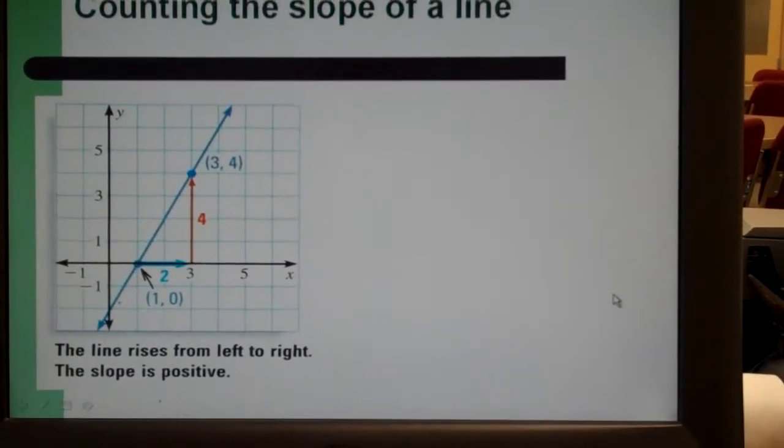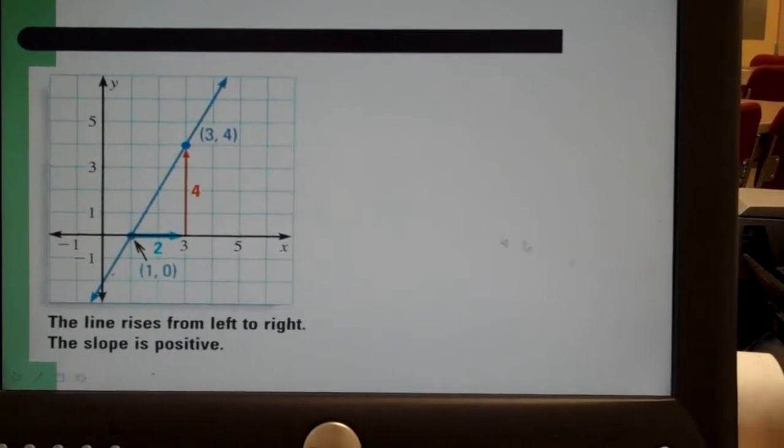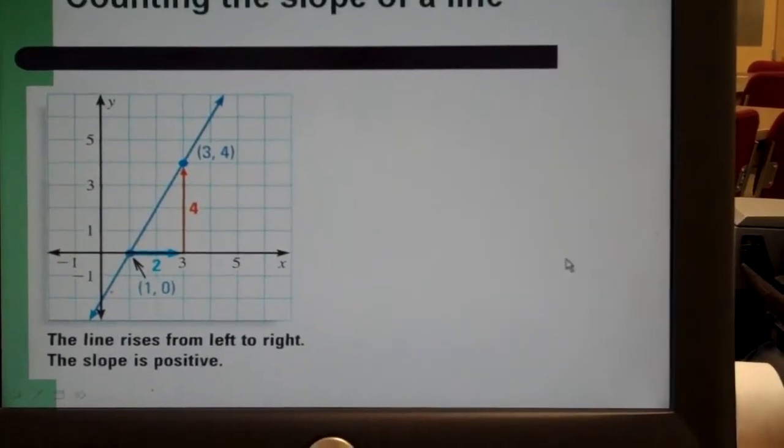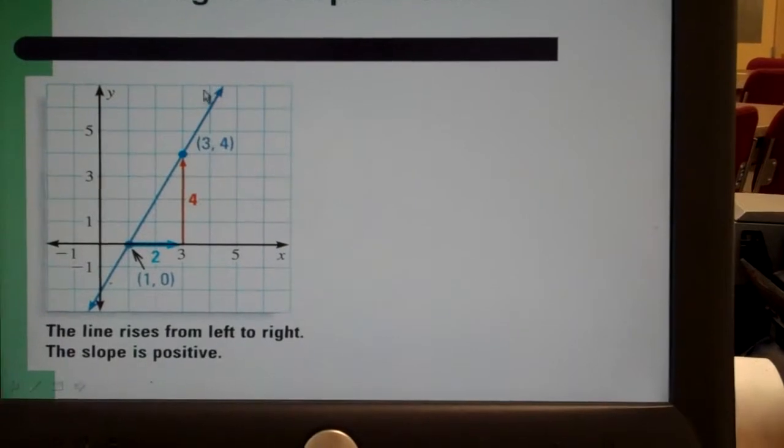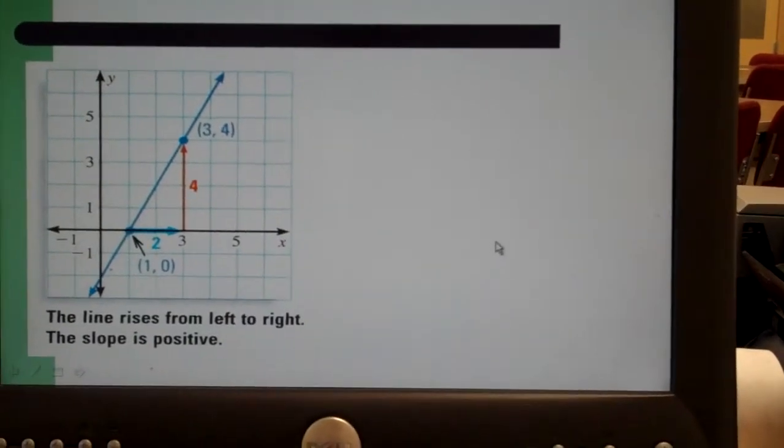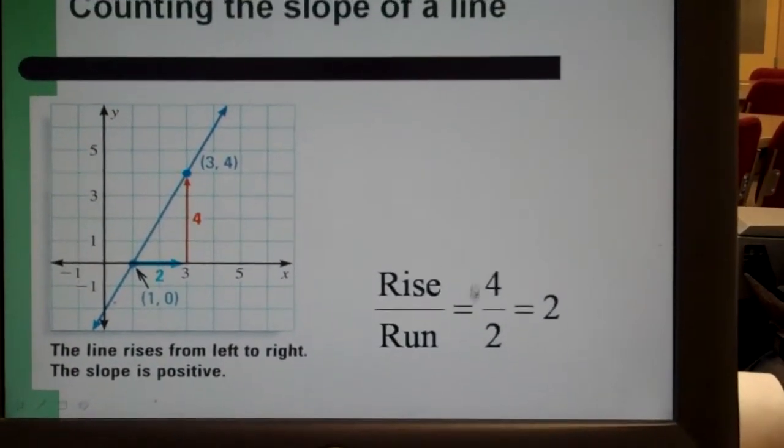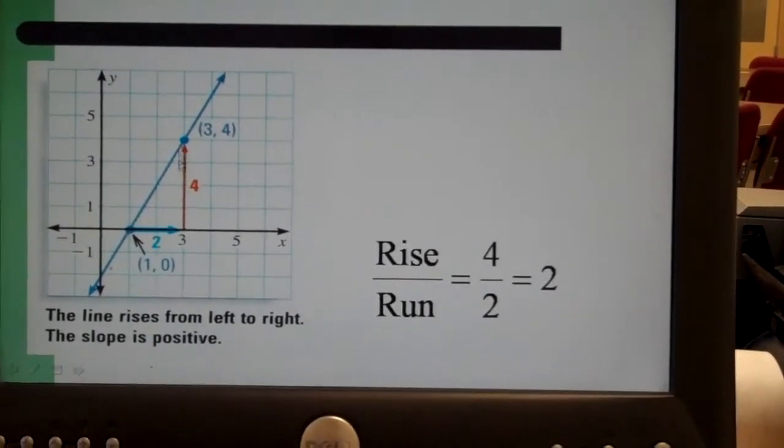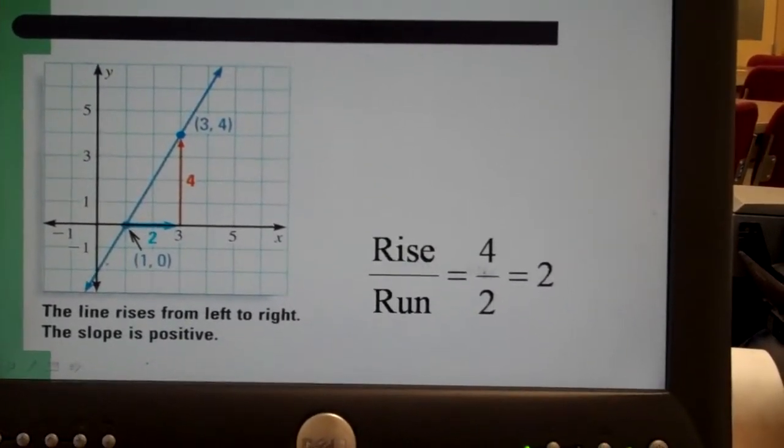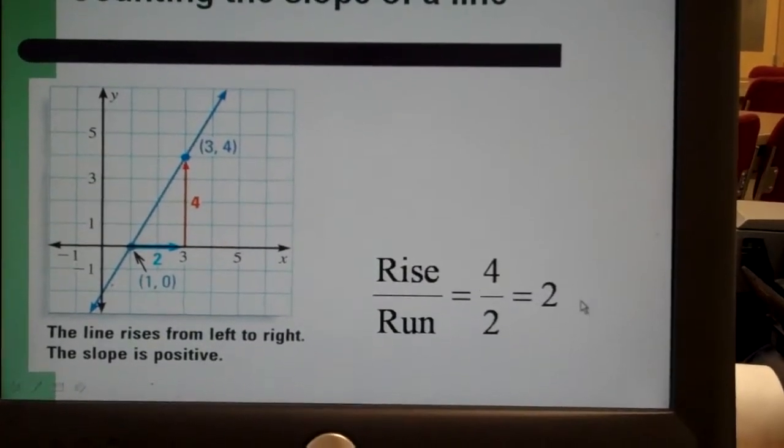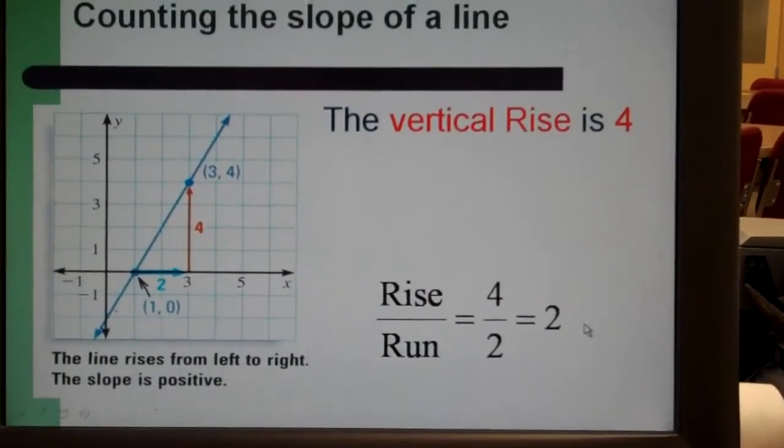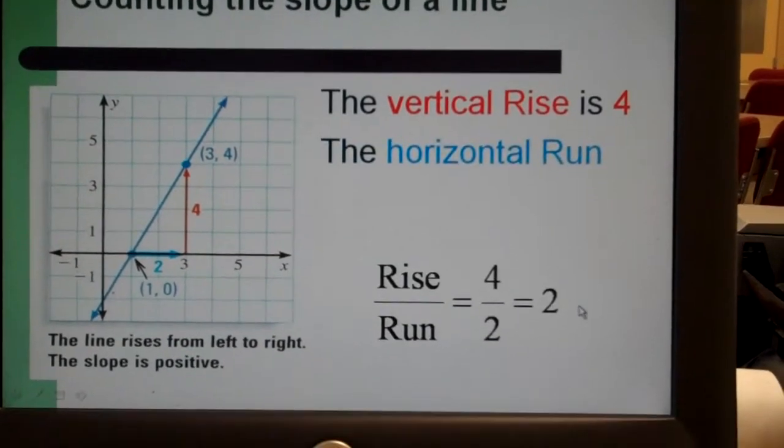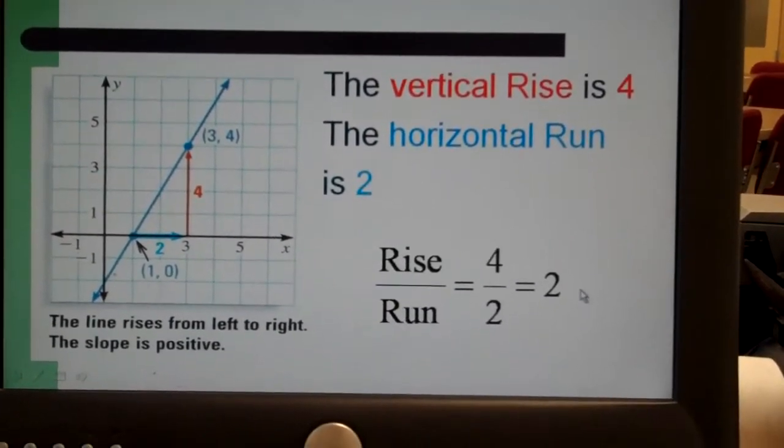What this looks like when we have two points in algebra. Take the point three, four, and the other point one, zero. And this line passes through both of those points. And so we can find the rise and run by counting. Again, four over two. Simplify it to just two. It's the vertical rise of four, the horizontal run of two.